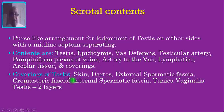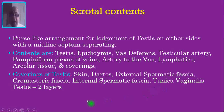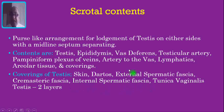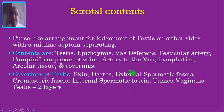The coverings of the testis from outside in are: skin, dartos muscle, external spermatic fascia, cremasteric fascia, internal spermatic fascia and the two layers of tunica vaginalis. The external spermatic fascia is derived from the external oblique aponeurosis. The cremasteric fascia is derived from the internal oblique muscle. The internal spermatic fascia is derived from transversus abdominis.